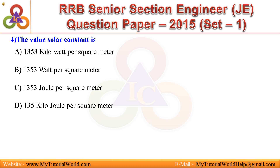Question 4: The value of the solar constant is — A. 1353 kW per square meter, B. 1353 kW per square meter, C. 1353 kJ per square meter, D. 135 kJ per square meter. Answer is: 1353 Watt per square meter.